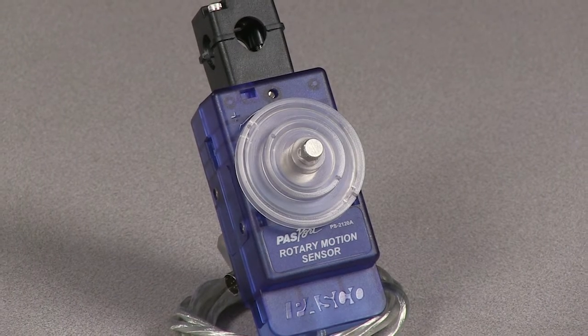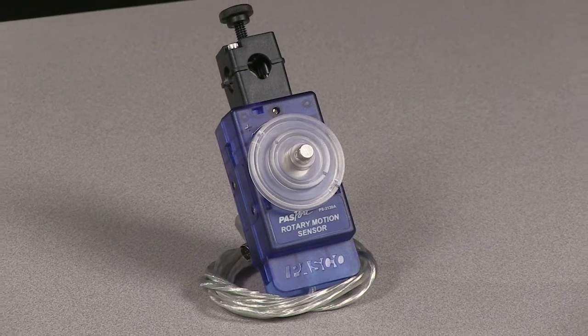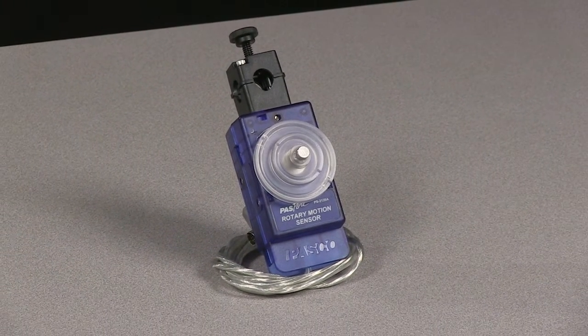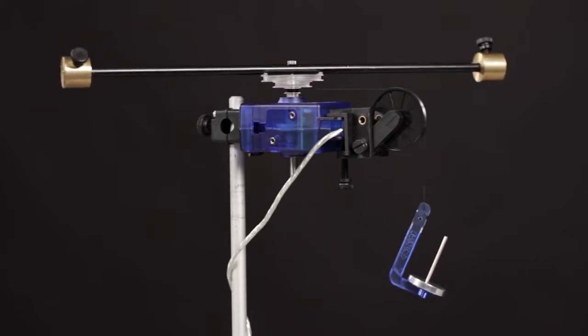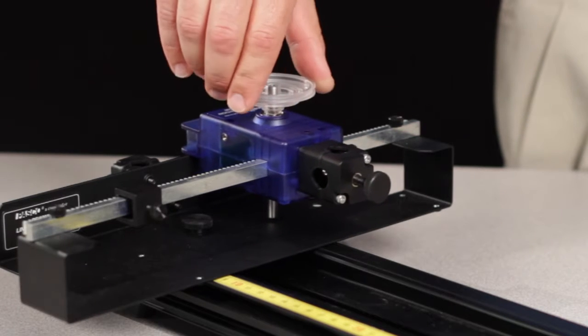The PASCO Rotary Motion Sensor is a versatile position and motion measuring device. It has a resolution of 0.09 degrees and can measure angular position, velocity, and acceleration, as well as linear position, velocity, and acceleration.